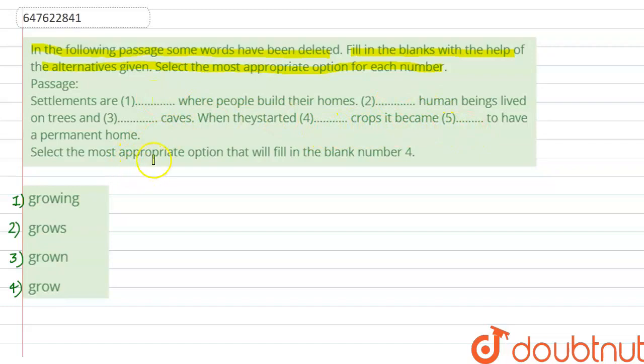In the blanks, we will fill the word and the sentence is complete. The passage is: Settlements are (1) where people build their homes. (2) human beings lived on trees and (3) caves. When they started (4) crops, it became (5) to have permanent home.